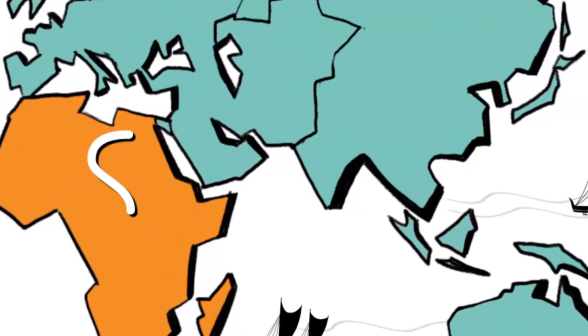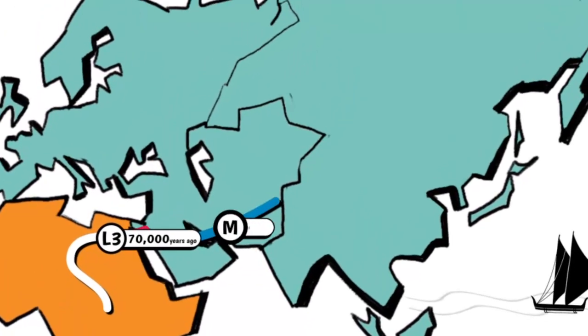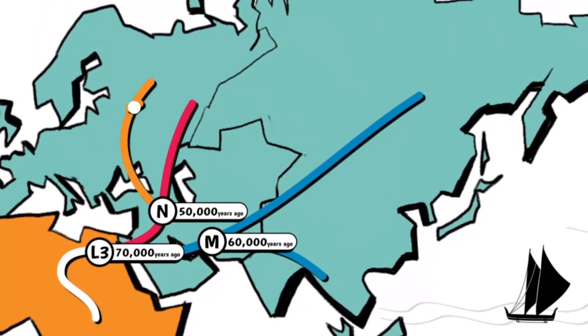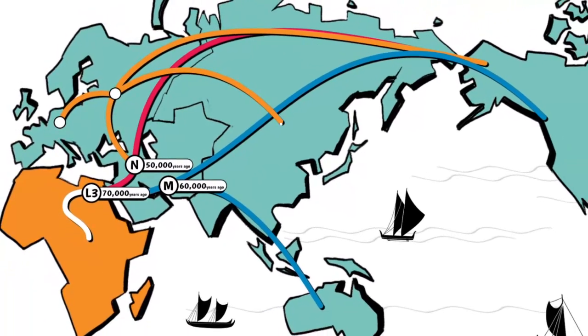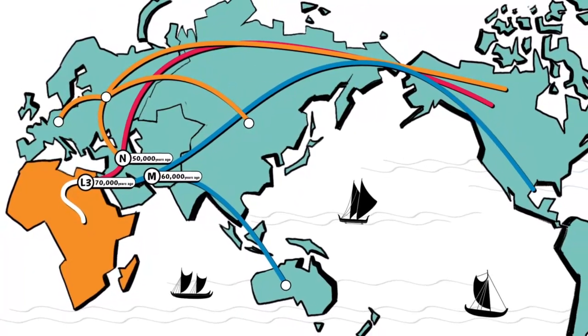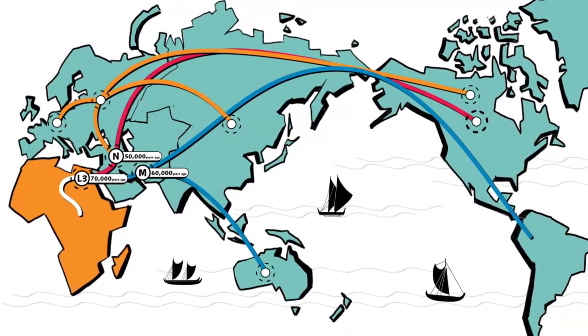Some descendants of our shared mother left Africa, migrating into the Middle East around 70,000 years ago, on their way to populate the rest of the world. As humans migrated, different variations of mtDNA were passed down, establishing the mtDNA tree.